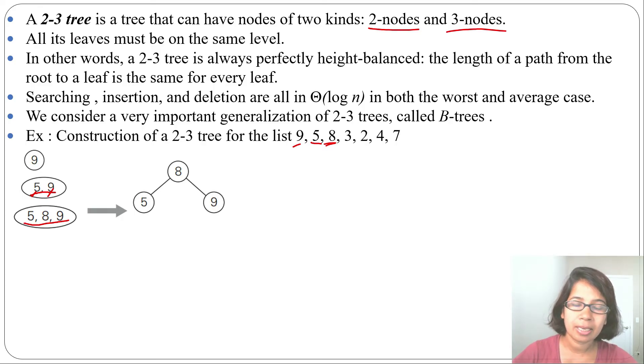Left child should be less than parent, right child should be greater than parent. Next we will insert 3. 3 is less than 8, less than 5, so we will insert 3 with 5.